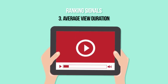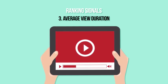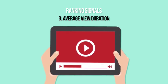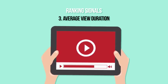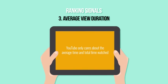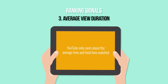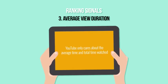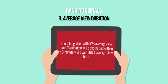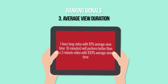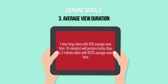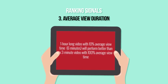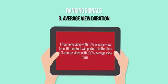Average view duration for both your channel and videos: When using vidIQ, the tool we'll be discussing later, you'll notice video watch time percentage. However, YouTube does not care about the percentage of a video that's been viewed. They only care about the average time and total time watched. An hour-long video with an average view time of 10% — that's 6 minutes — will perform better than a 3-minute video with 100% average view time, given that the rest of the ranking metrics are identical.